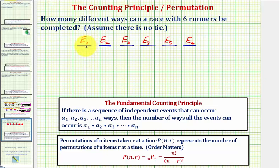Starting with first place, since there are six runners, there are six possible outcomes or six possible winners, so we have six times. Given someone already won first, how many possible second place finishers would there be? There would be five, because one of them already won first, so times five.